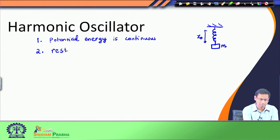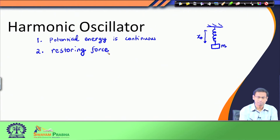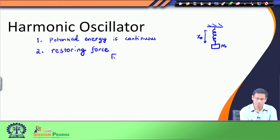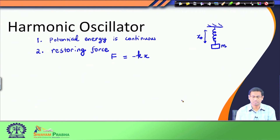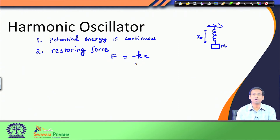We are dealing with a system where there exists a restoring force, and this restoring force is opposite to the direction of the displacement. Therefore I can write this equation with a minus sign multiplied by x, which is the dimension along which I am stretching or shrinking the spring. This minus x suggests that the restoring force is against or in the opposite direction to the displacement, and k is the force constant, also called the spring constant.